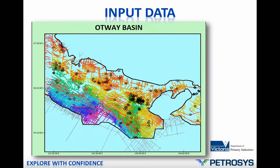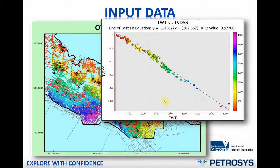This is the input data we'll be using today. We have seismic lines with two-way time interpretation, some faults shown in red, and our well data. We'll be using an Excel spreadsheet with well locations and depth at the top of the formation of interest. We've also got a polygon to clip the data so we don't extrapolate into areas with no data. When we compare our two-way time with depth data in the cross-plot module, we get a formula we can use in our gridding algorithm.